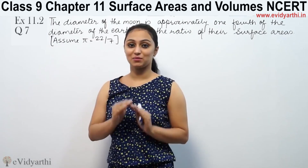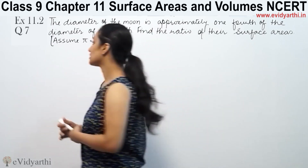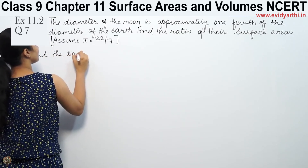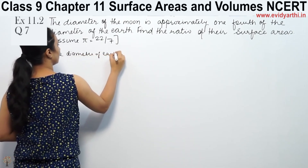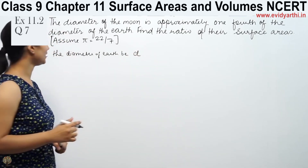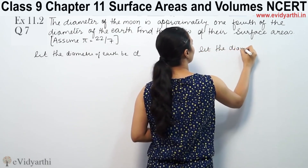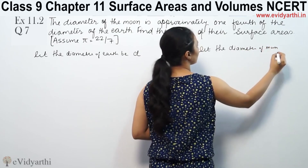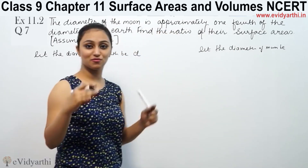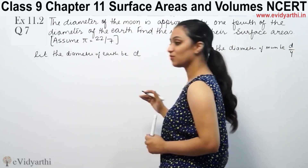The moon's diameter is one-fourth of the earth's, so the earth's diameter is bigger than the moon's. Let the diameter of earth be D. The diameter of moon is approximately one-fourth of earth's diameter, so it is D by four.